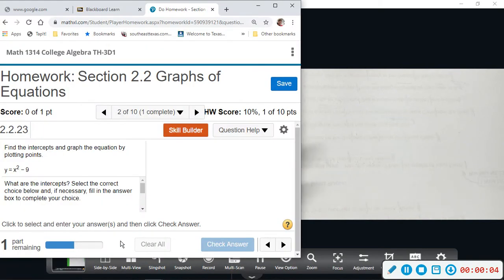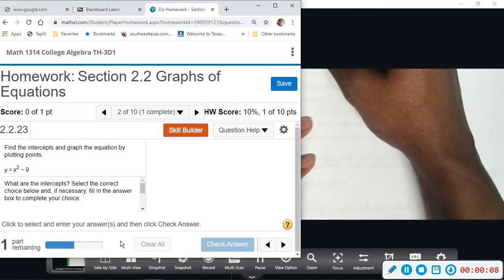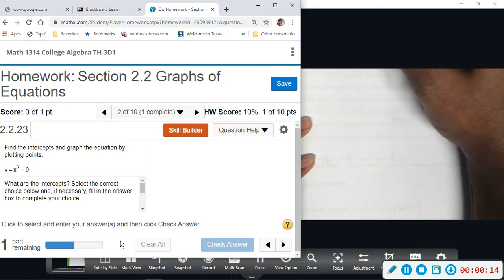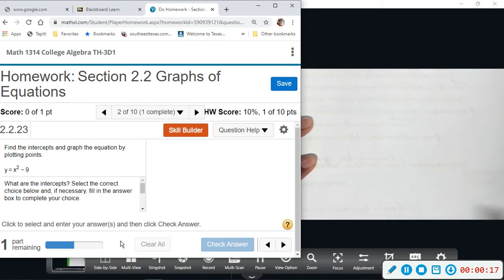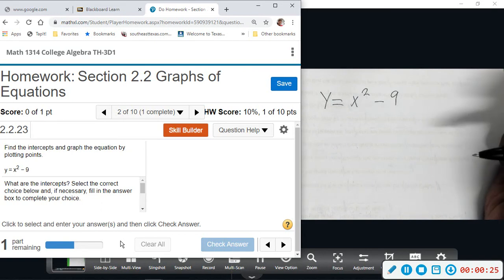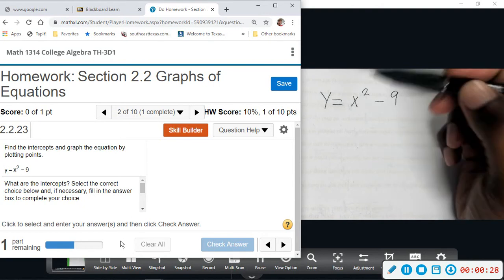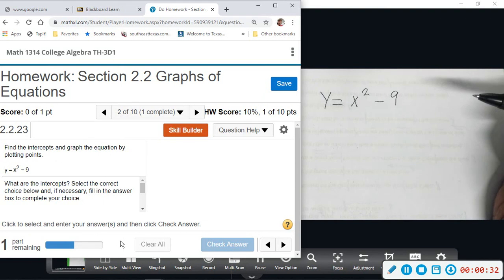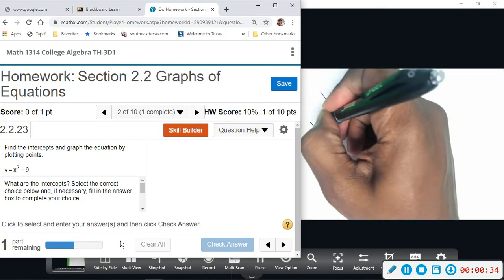For number two, we want to find the intercepts and graph the equation. This time our equation is y equals x squared minus nine. We're going to find the x-intercept and the y-intercept and we're going to plot those. With a parabola, you need at least three points to graph it, so we're going to do y-intercept first.